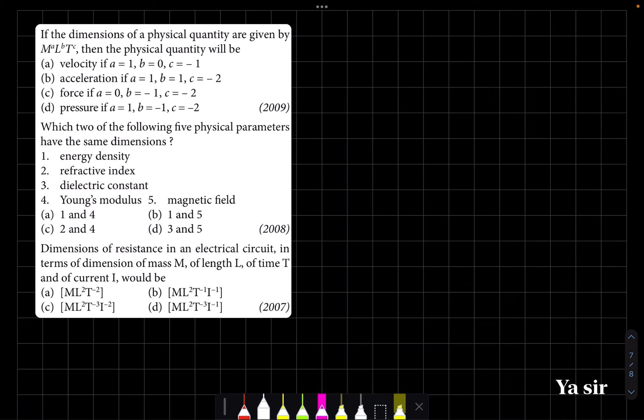Velocity a equals 1, so there itself it is wrong. Why? Because a cannot be 1, because velocity is LT to the power minus 1. So how can mass be 1? That is not possible.